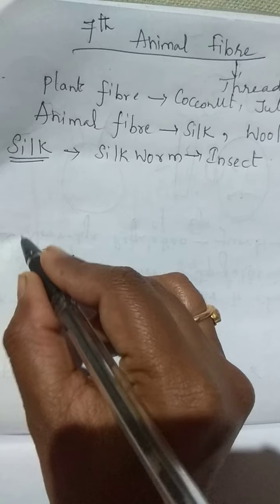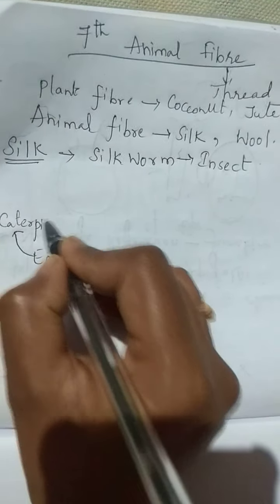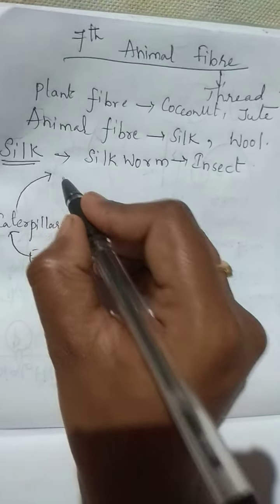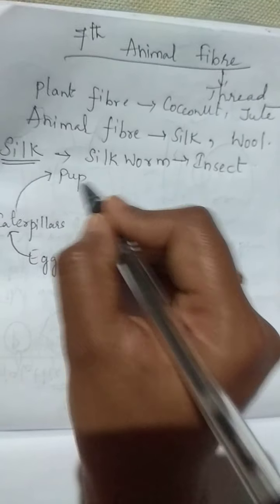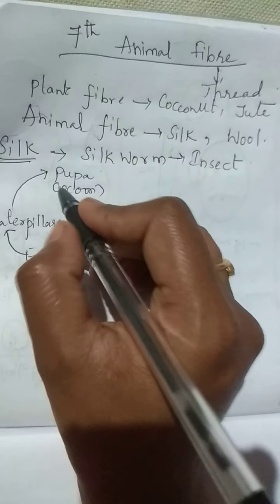Eggs hatch and we get small caterpillars. From caterpillars we get the next stage, pupa. Pupa in silkworm has a special name: cocoon.